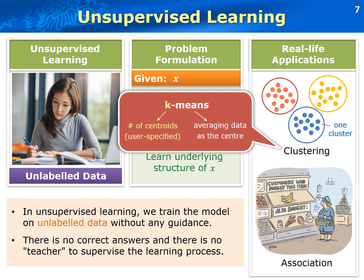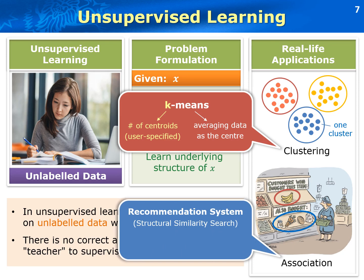Association is another application of unsupervised learning, which is quite popular in recommendation systems. In some shops or online, such as Amazon, when a customer buys an item, the system will recommend similar items to the customer by showing that customers who bought this item may also be interested in the following items. These recommendations are actually based on association, that is, the similarity between the products. We can get this similarity information through unsupervised learning to identify the underlying structure of the items. For example, two items can be evaluated as similar if they are bought by similar customers.